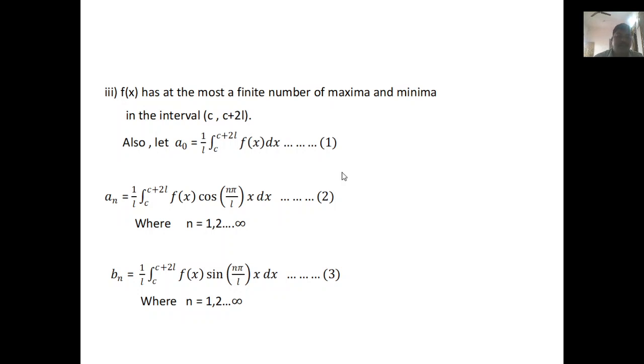Also, let a₀ = (1/l) integral from c to c+2l of f(x)dx. And aₙ = (1/l) integral from c to c+2l of f(x)cos(nπx/l)dx, where n = 1, 2, 3, ... to infinity. And bₙ = (1/l) integral from c to c+2l of f(x)sin(nπx/l)dx.